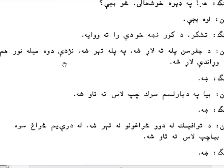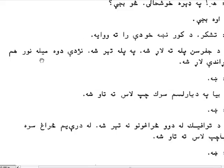Then dwa mila nor ham urande larcha — go close to two miles more ahead. Mila means mile, nor and more mean the same — noting the Indo-European relationship. Ham means also, urande means ahead, larcha means go.